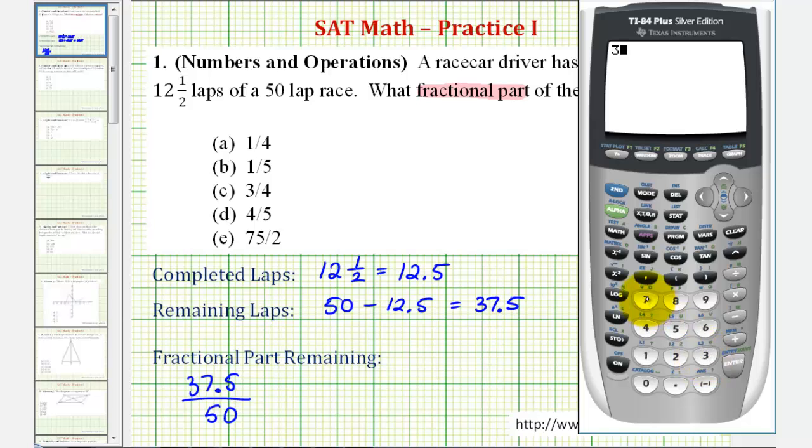We're going to enter 37.5 divided by 50, which will give us a decimal, which we should recognize as three-fourths. But if we don't, we can press math, enter, enter, which gives us three-fourths. So three-fourths of the race remains.